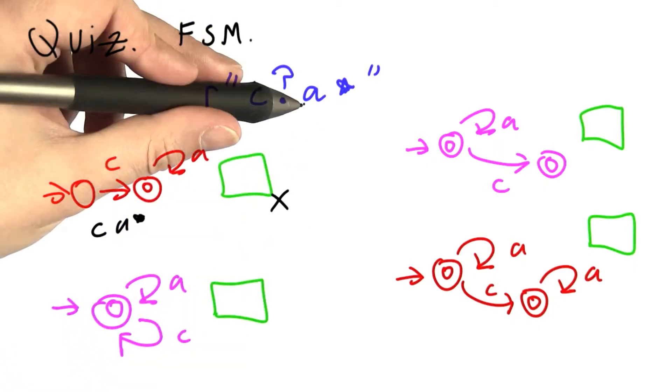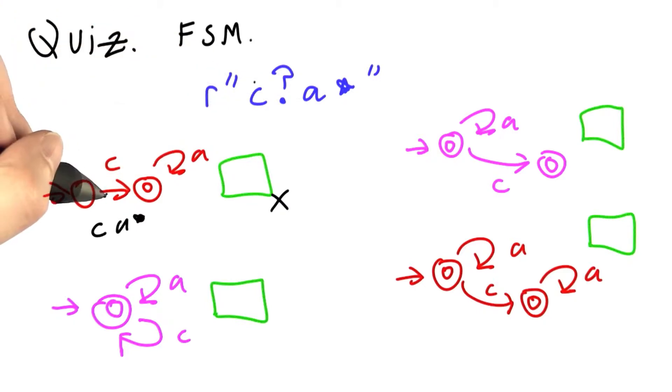A string that's accepted up here, a, or even the empty string, is not accepted down here. Down here, this finite state machine would allow you to do a c a c a c, to alternate between them because there's only one state.